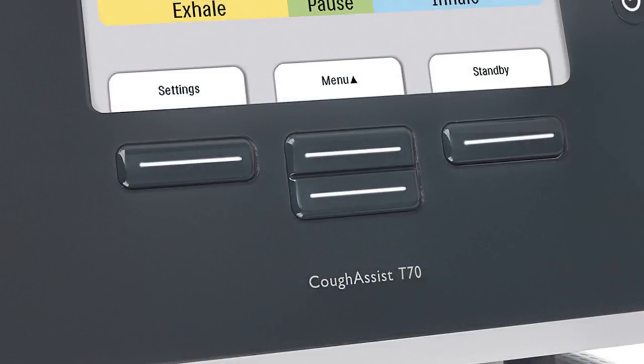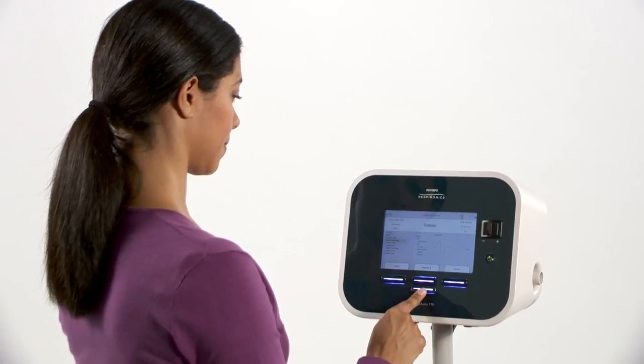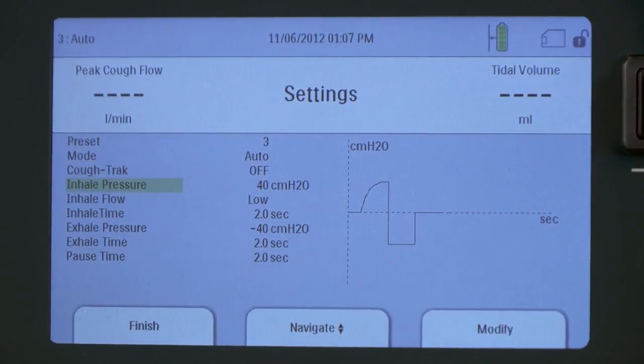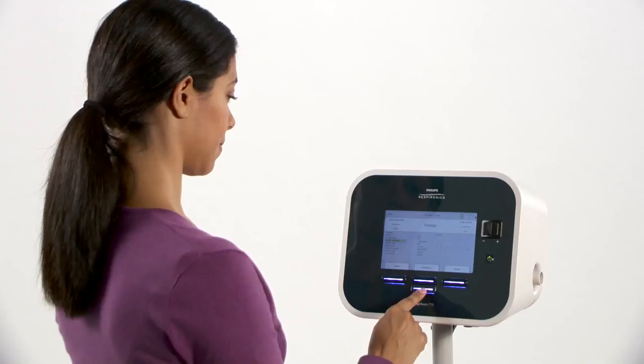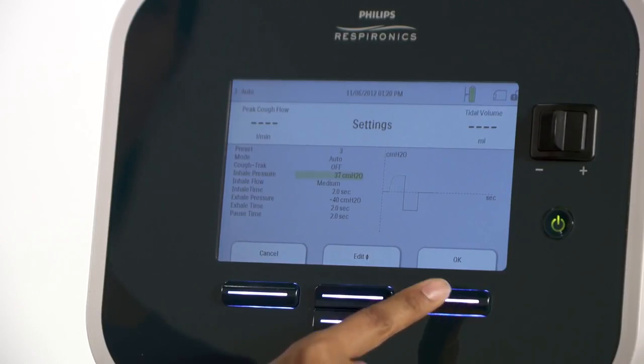You can select other settings by using the center navigate buttons. Let's say you want to change the pressure temporarily while a patient is being introduced to treatment for the first time. Use the center up-down button to move down the list until inhale pressure is highlighted. Press on the right button under modify. Use the center up-down button below edit to lower the pressure to the new setting.